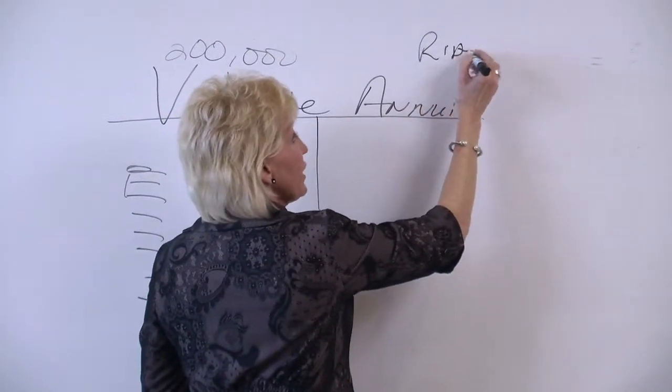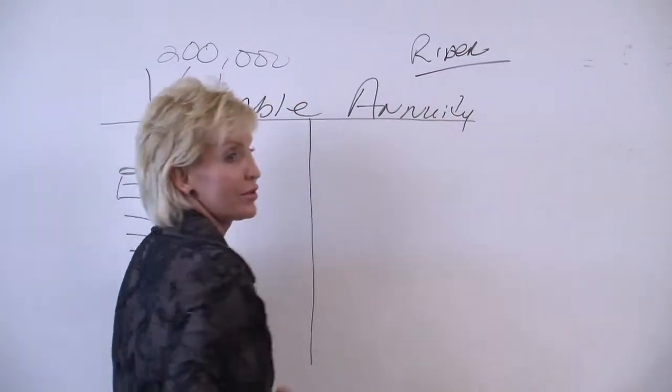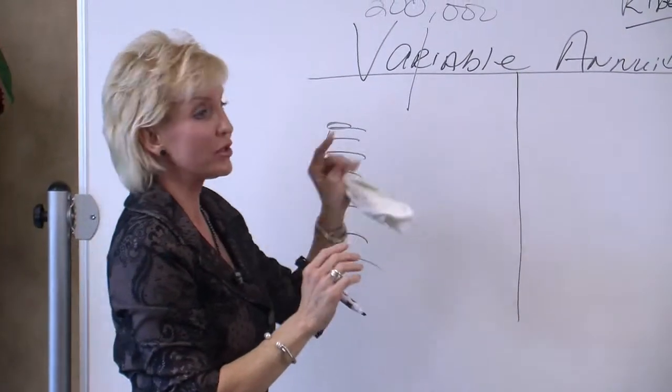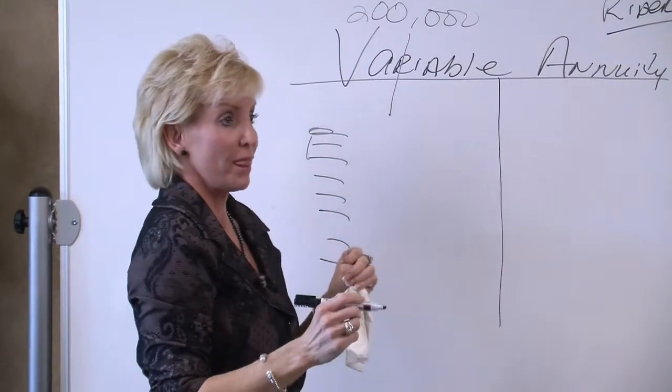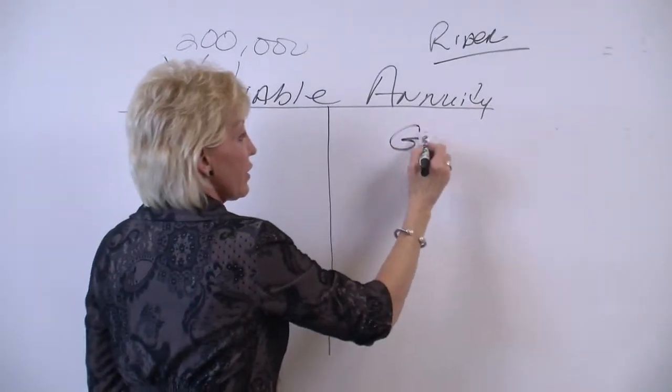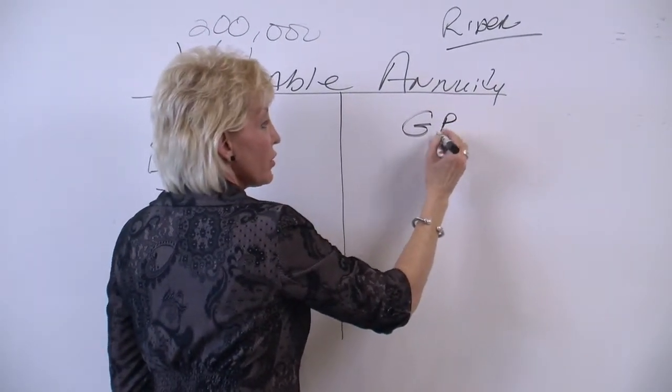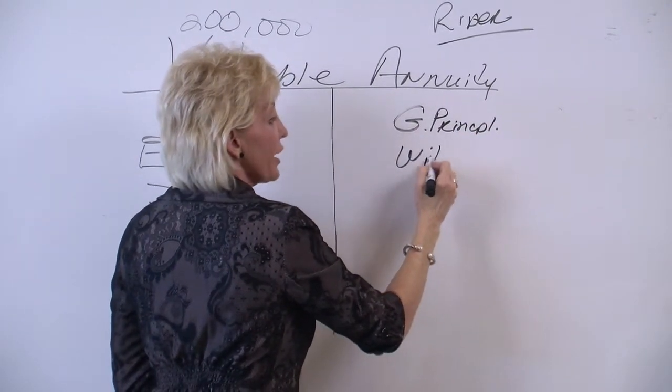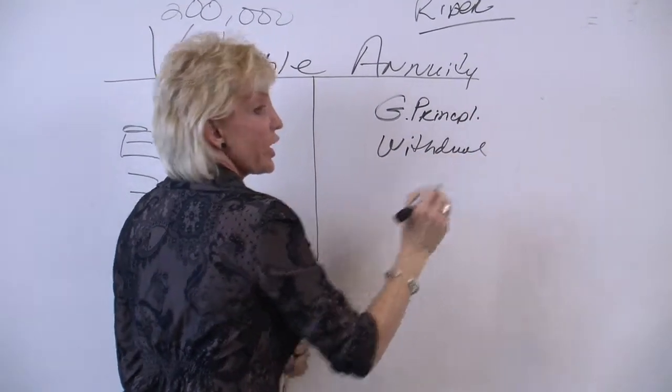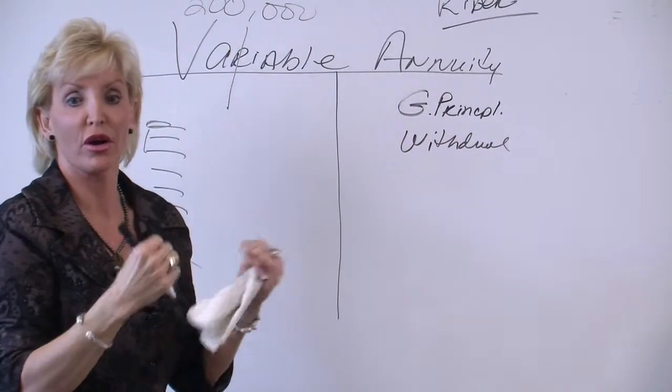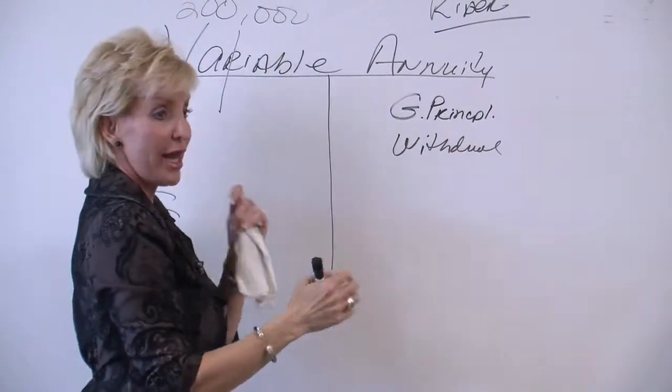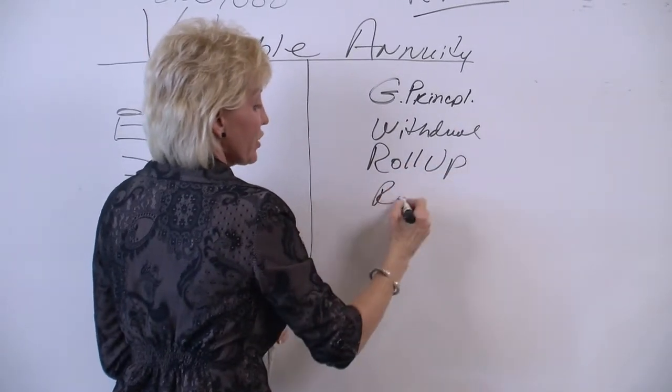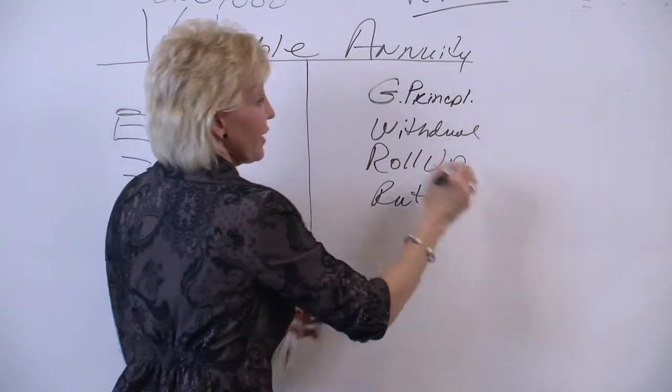Now, there are many different kinds of riders. This is what gets tricky. In a variable annuity, you can have a guaranteed principal, you can have a withdrawal rider which guarantees you a certain amount of withdrawal from your account. You can have a roll-up, a ratchet, and the list goes on.